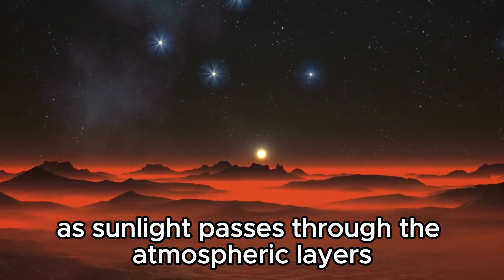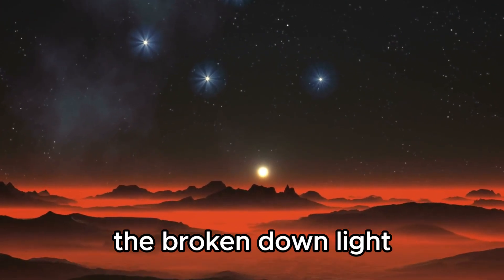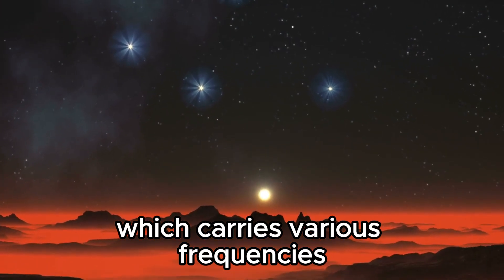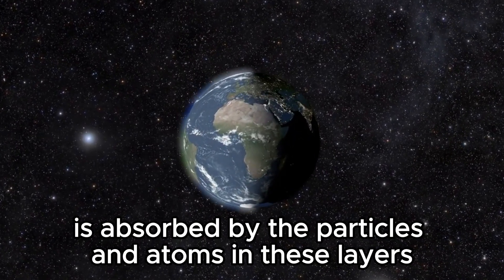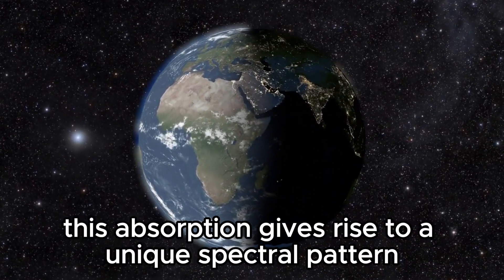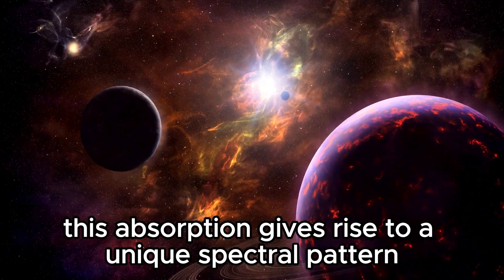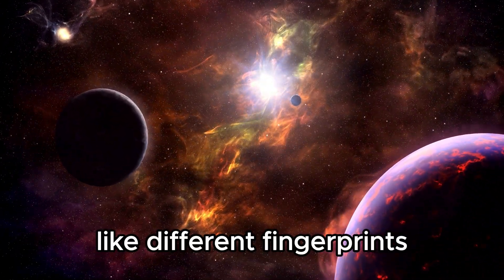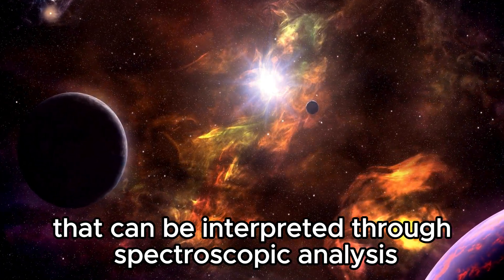As sunlight passes through the atmospheric layers, the broken-down light, which carries various frequencies, is absorbed by the particles and atoms in these layers. This absorption gives rise to a unique spectral pattern, like different fingerprints that can be interpreted through spectroscopic analysis.